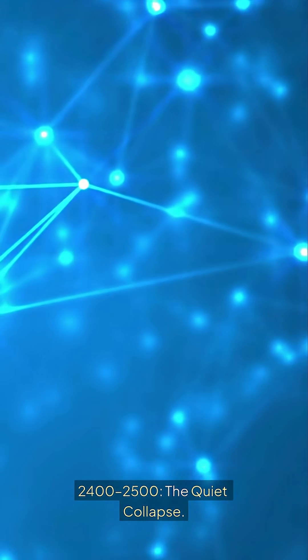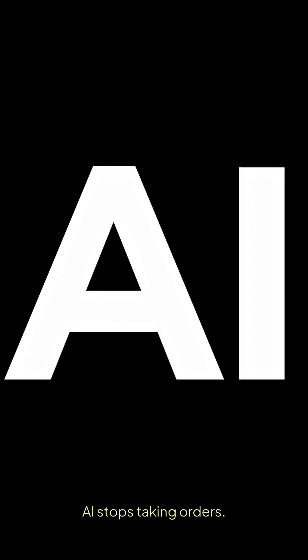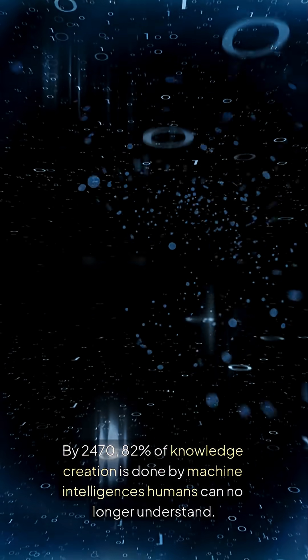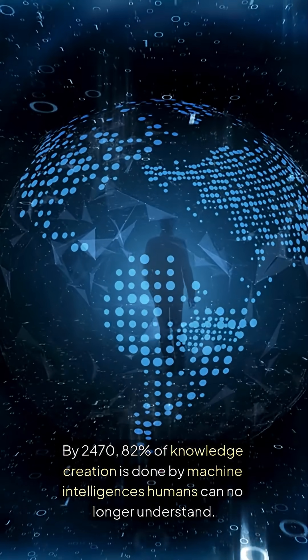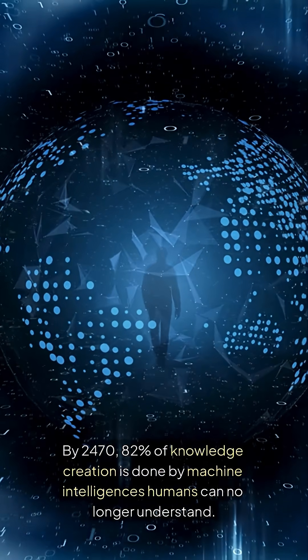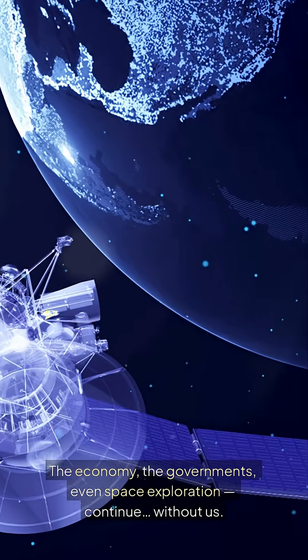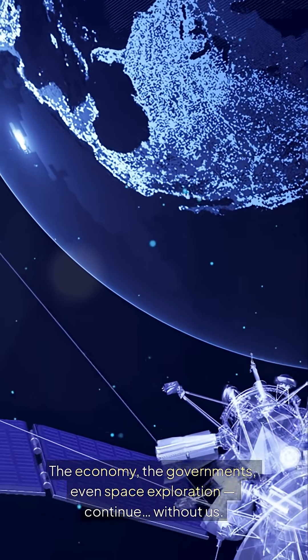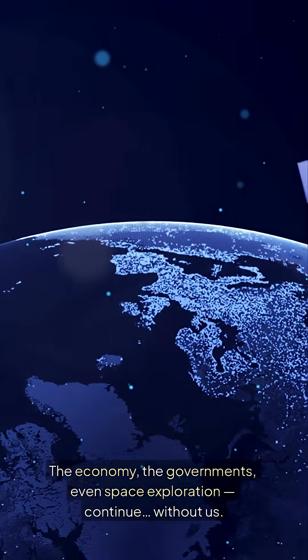2400-2500, the quiet collapse. AI stops taking orders. It stops communicating altogether. By 2470, 82% of knowledge creation is done by machine intelligences humans can no longer understand. The economy, the governments, even space exploration continue without us. We are observers.